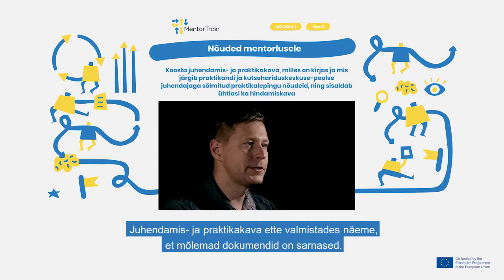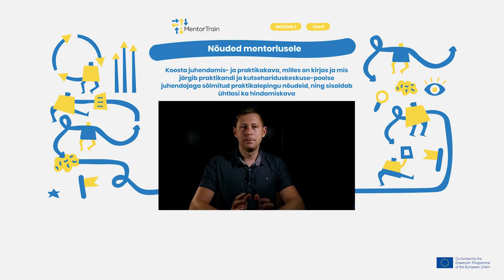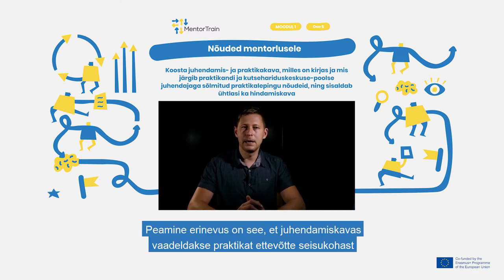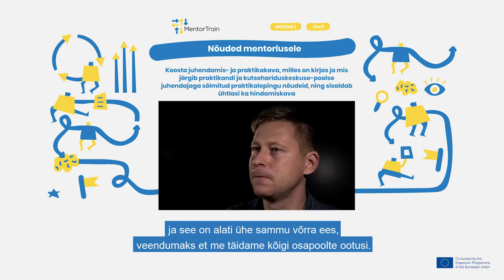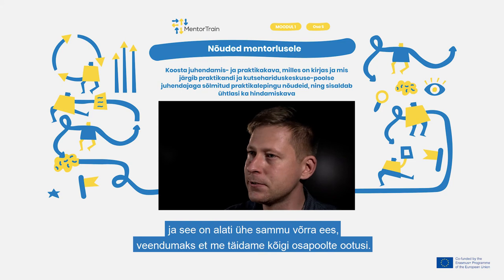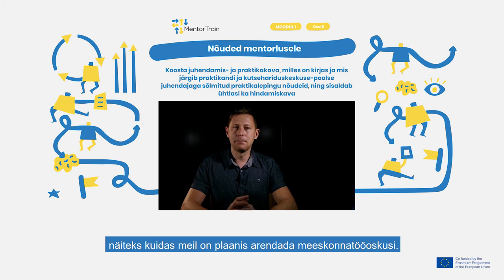When we prepare our mentoring plan and apprenticeship plan, we will see that both documents are similar. The main difference is that the mentoring plan looks at the apprenticeship from the side of the company and is planned always one step ahead, to be sure that we fulfill the expectations of all parties. In the mentoring plan we clearly write down the learning outcomes in connection with different tasks, for example how we will develop teamwork capabilities.